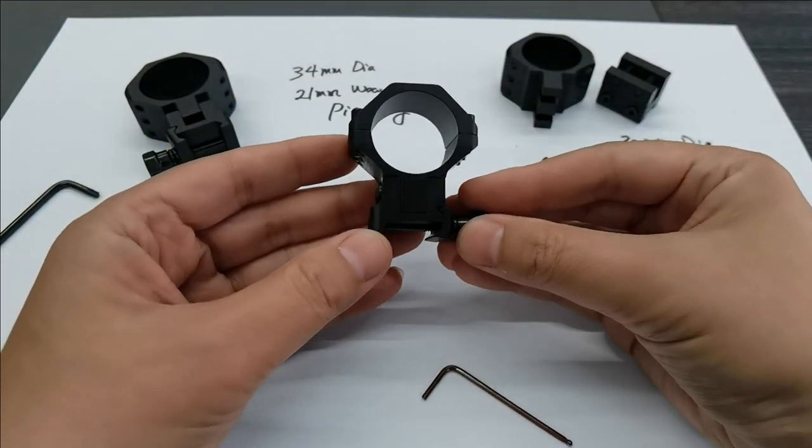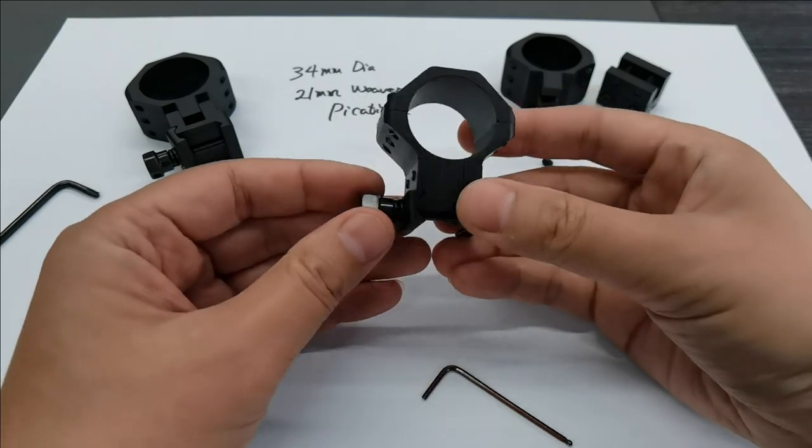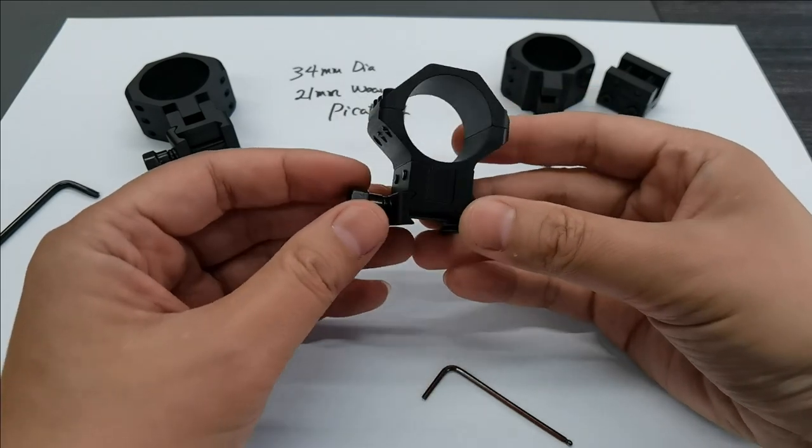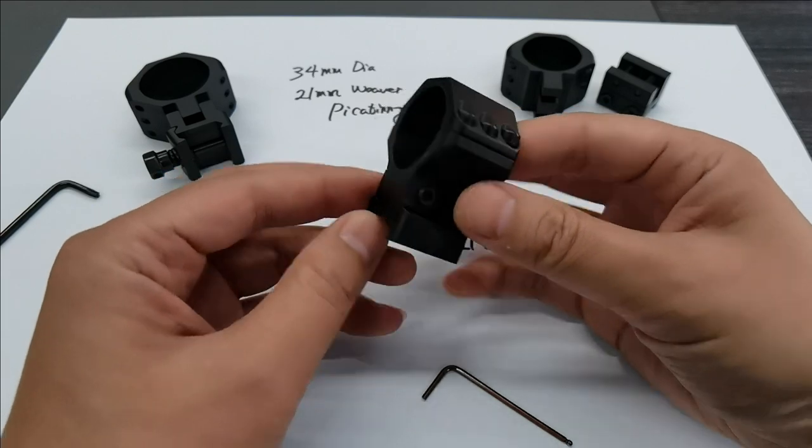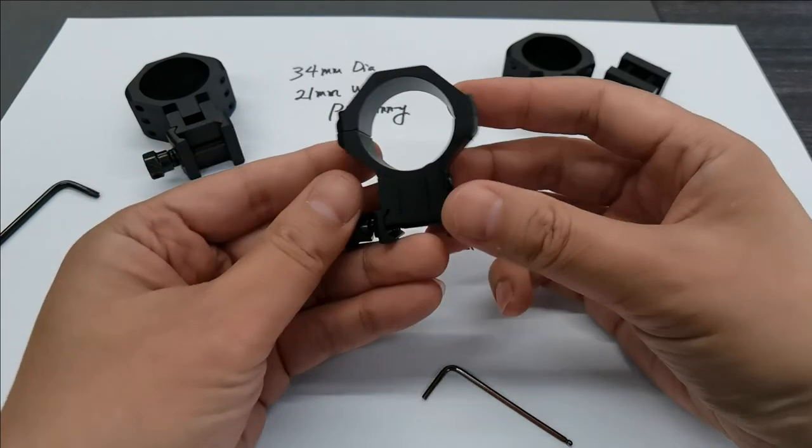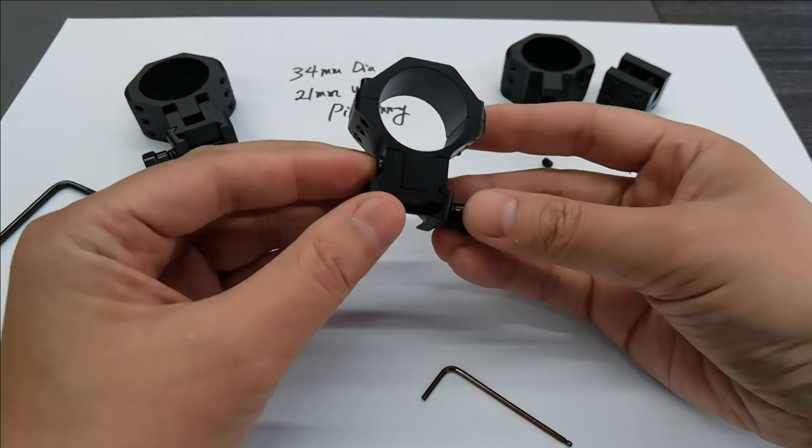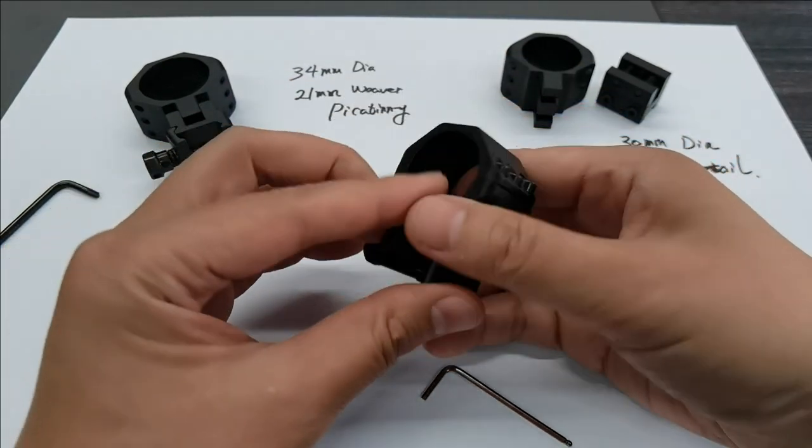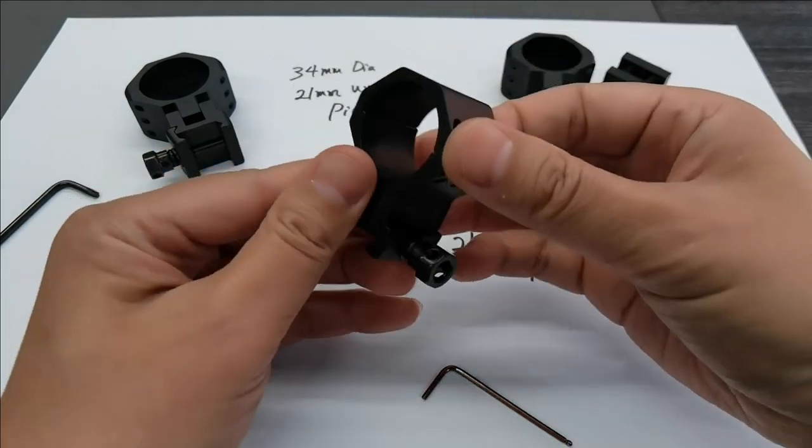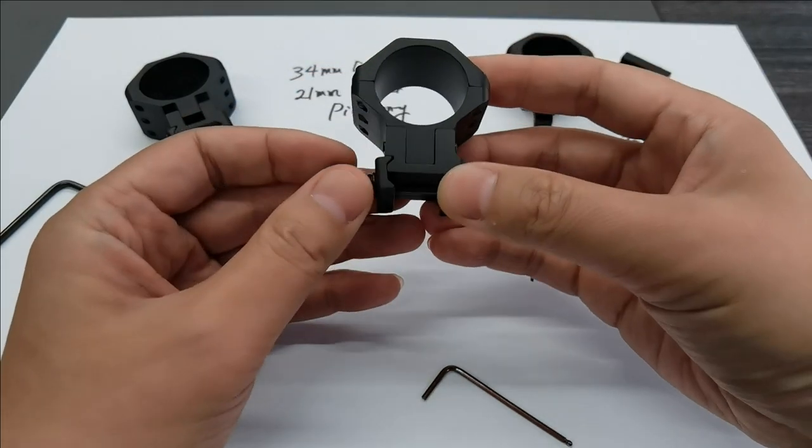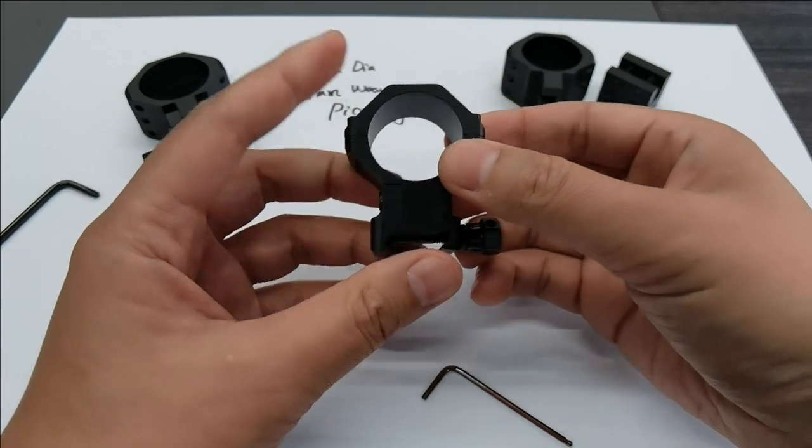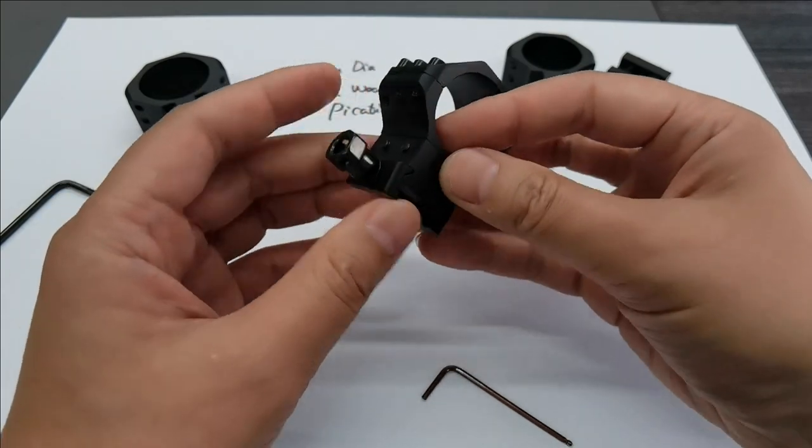Okay, that's today's adjustable scope rings review. That's 40 MOA, the highest 40 MOA. Thanks for watching. If you have any questions, do not hesitate to contact us. Thank you.